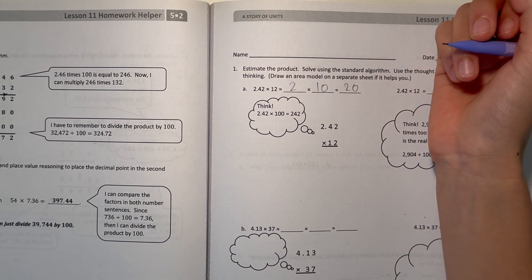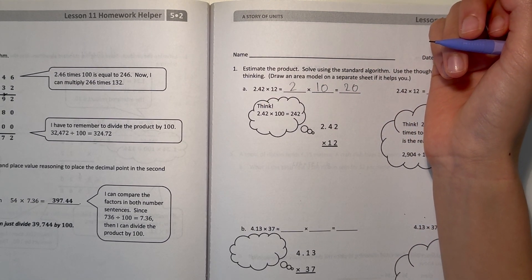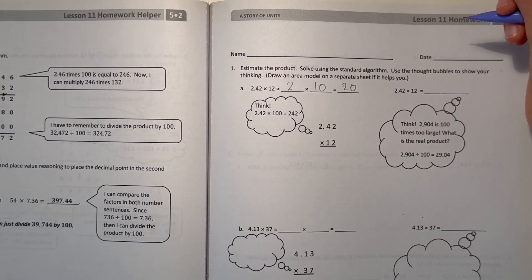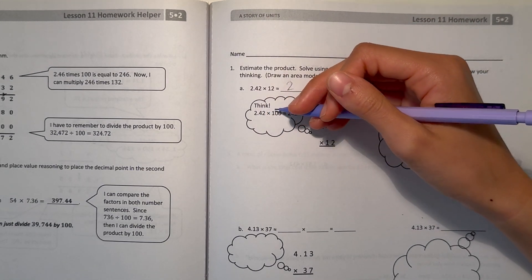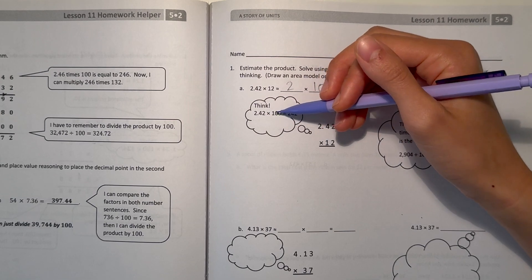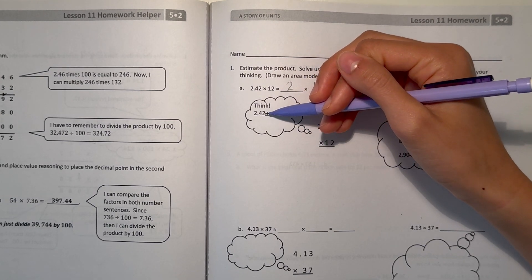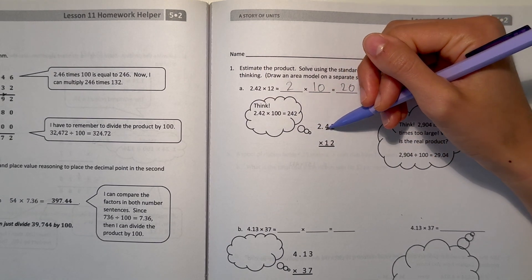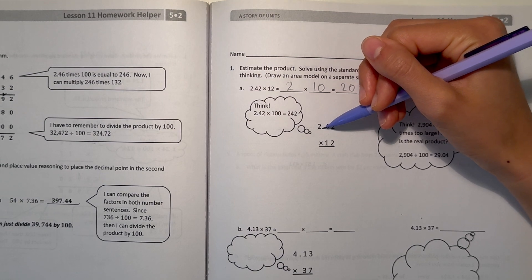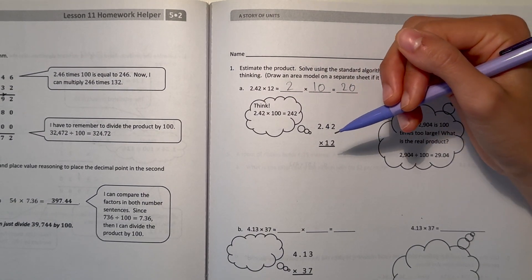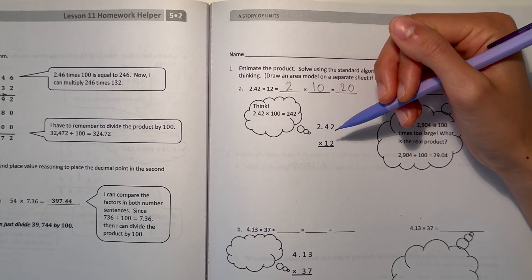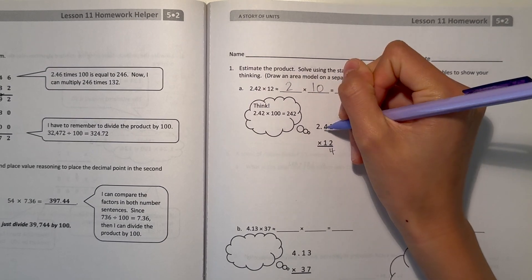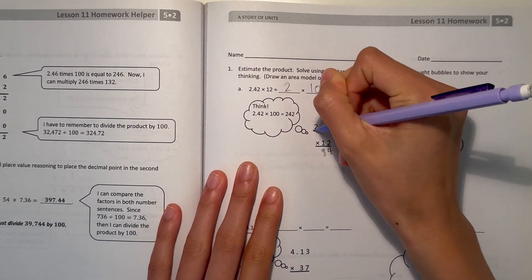When we're multiplying by decimals, sometimes it's hard to know where the decimal point falls. So this lesson tells us to think like 2.42 is actually 242, times 100 to get rid of the decimal point and make it a whole number 242. In our standard algorithm, you can still see the decimal point, but we're just going to ignore it. So we're thinking of it as 242 times 12. So let's look at the 2: 2 times 2 is 4, 4 times 2 is 8, and 2 times 2 is 4.